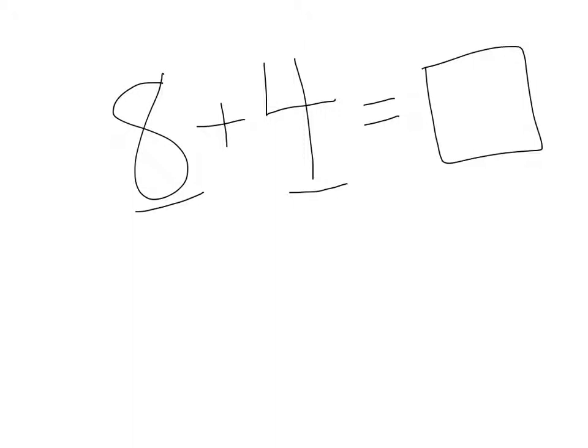First, we're going to circle the largest addend, 8. Now, we're going to break apart the lesser addend to make 10. So, what can I use from the 4 to make 10 with the 8?